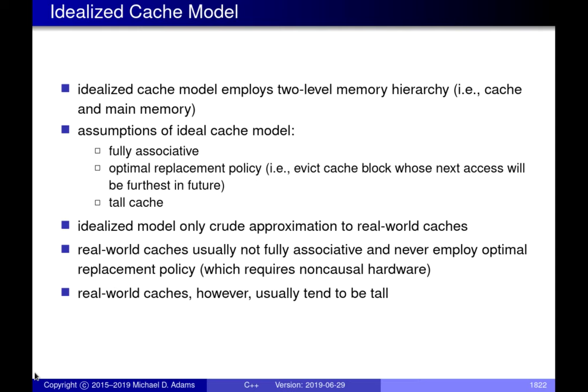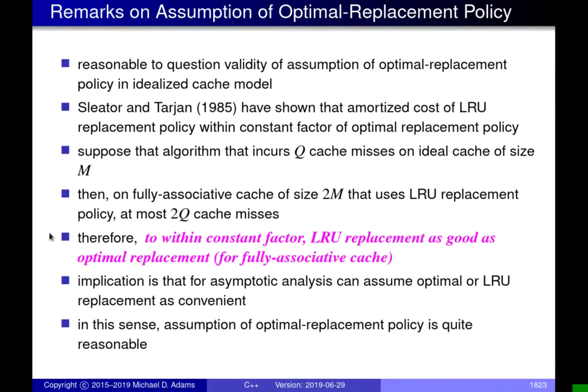Of these assumptions, the most questionable is the optimal replacement policy. I'm going to look at this in a bit more detail to motivate why it's actually a reasonable assumption to make. One of the assumptions made by the idealized cache model is that the cache employs an optimal replacement policy, and it's very reasonable to question the validity of such an assumption because clearly we can't implement it — it would require non-causal hardware. But it turns out this is not such an unreasonable assumption. In a paper by Slater and Tarjan, they showed the following result.